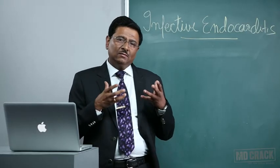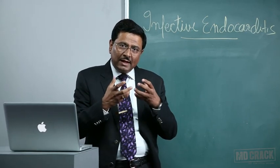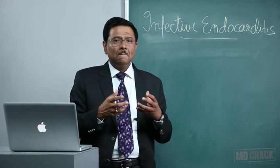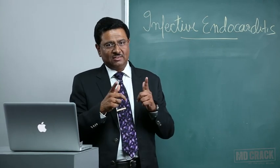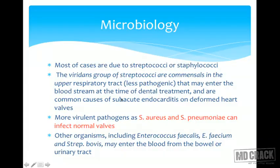If the organism is of low virulence, it will attack portions of the endocardium already damaged. If the organism is of high virulence, it can infect normal areas of the endocardium too. More virulent pathogens such as Staphylococcus aureus and Streptococcus pneumoniae can infect normal valves. Other organisms including Enterococcus faecalis and Streptococcus bovis may enter the blood from the bowel or urinary tract.